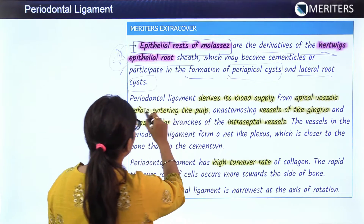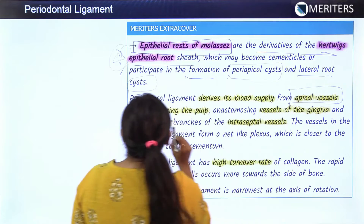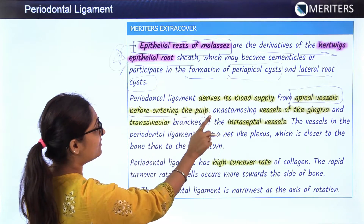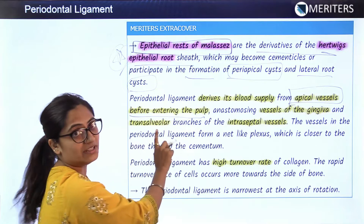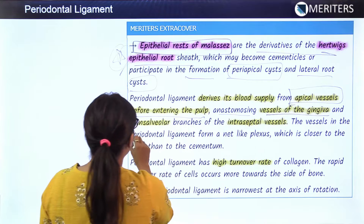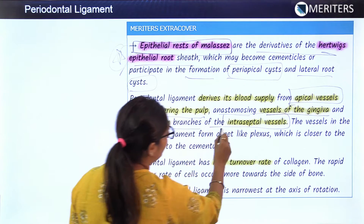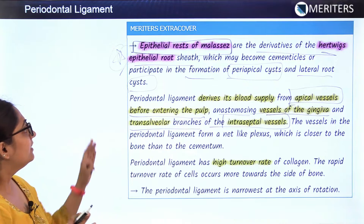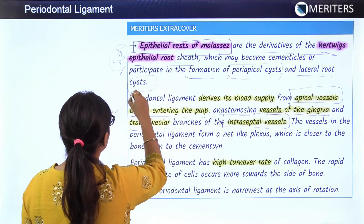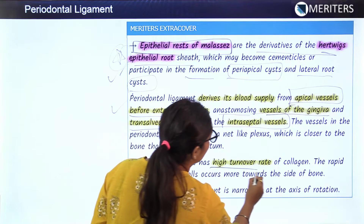The blood supply of the periodontal ligament is derived from three sources: apical vessels before entering the pulp, anastomosing vessels of the gingiva, and transalveolar branches of the interseptal vessels.